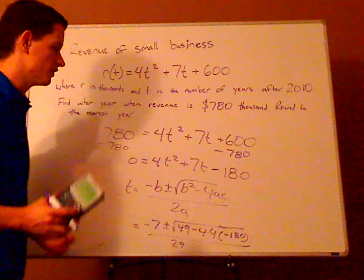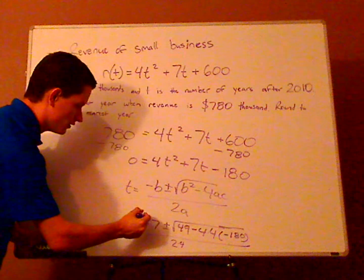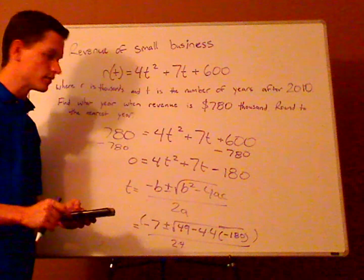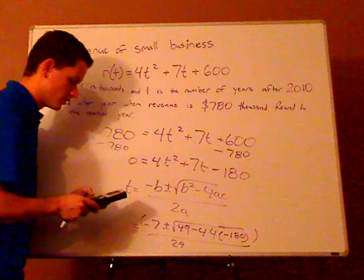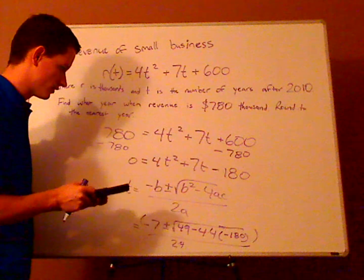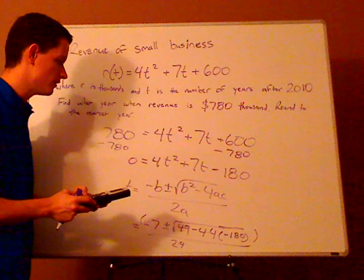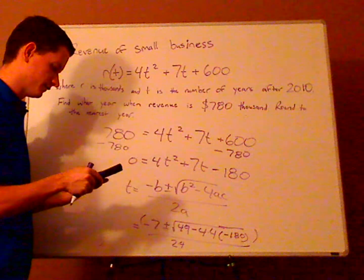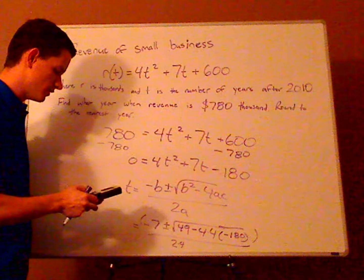Now, break out your calculator and you want to type this in. I'm going to type it in one full swoop, so I'm going to put this in parentheses. So it's parenthesis, negative 7. Now, I'm going to do it with the plus, so that's plus square root. And then under my square root, I'm going to put this. With some calculators, you might have to use parentheses. So 49 minus 4 times 4, and then times, and you want to push the negative button. If you push the minus button, things are going to mess up. Negative 180, and close parenthesis, divided by 8.